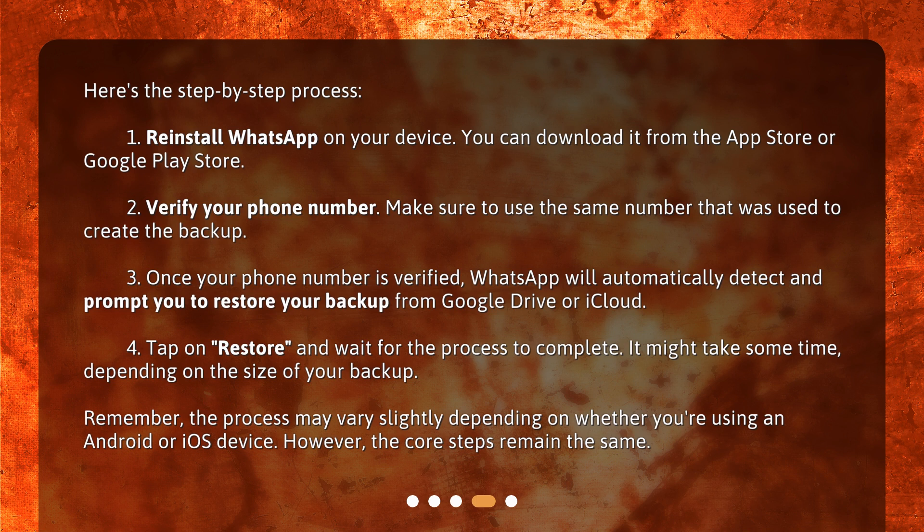Step 3: Once your phone number is verified, WhatsApp will automatically detect and prompt you to restore your backup from Google Drive or iCloud. Step 4: Tap on Restore and wait for the process to complete. It might take some time, depending on the size of your backup.